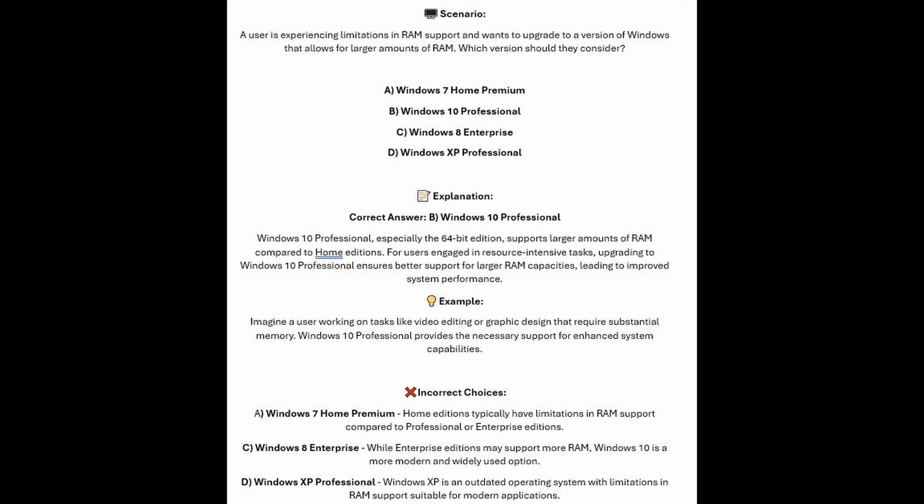Windows 10 Professional, especially the 64-bit edition, supports larger amounts of RAM compared to home editions. For users engaged in resource-intensive tasks, upgrading to Windows 10 Professional ensures better support for larger RAM capacities, leading to improved system performance. Imagine a user working on tasks like video editing or graphic design that require substantial memory — Windows 10 Professional provides the necessary support for enhanced system capabilities.